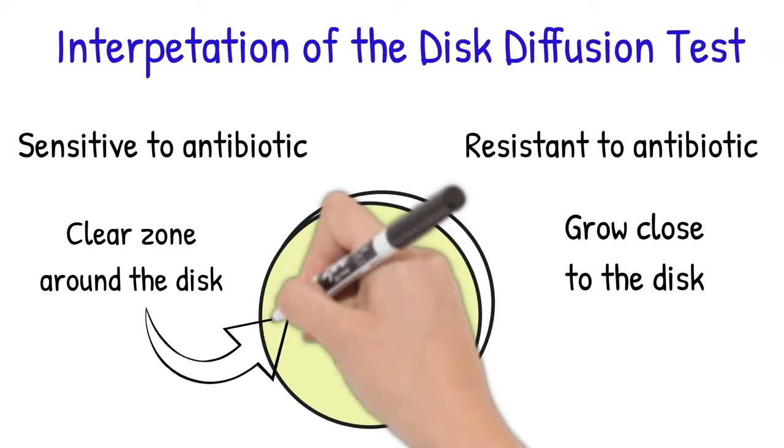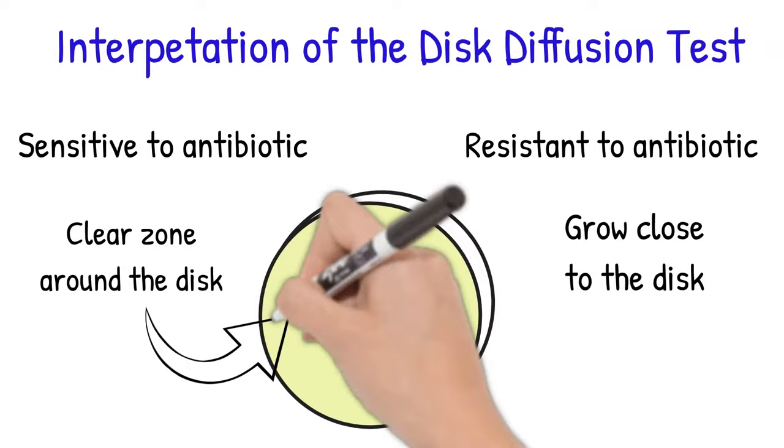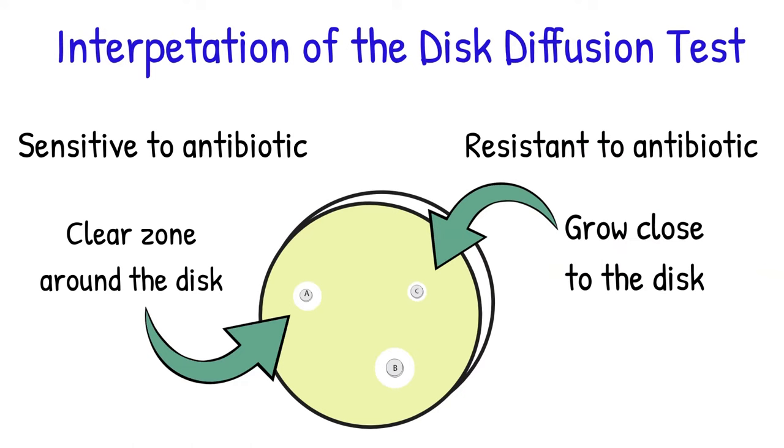Since the resistant bacteria is relative, some strains are more resistant than others. So we cannot just say which one is susceptible and which one is resistant by just looking at the zone of inhibition or the zone around the disc.